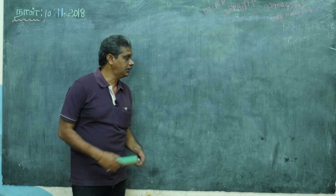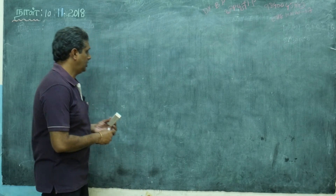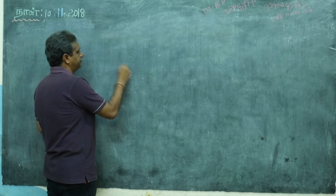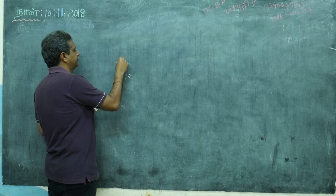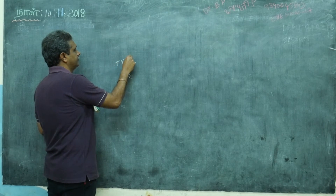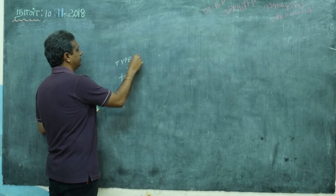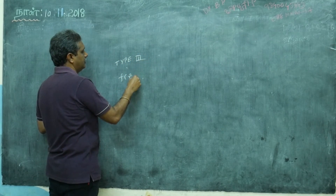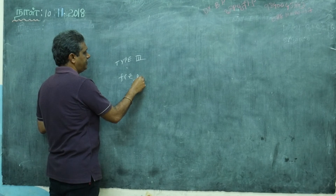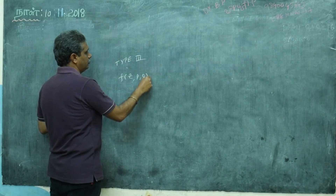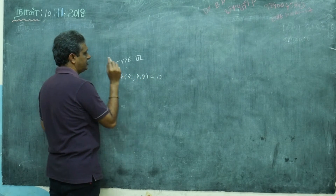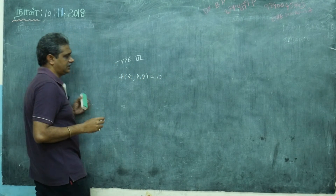Now, third type: you will have f of z, P, Q — the function contains P, Q, and z only; there is no x or y.